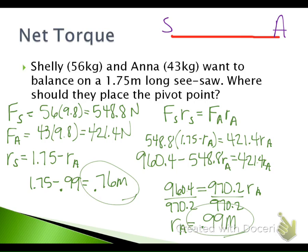To find Shelly's distance from the pivot point, we take 1.75 minus 0.99 meters, giving us about 0.76 meters. So the pivot point should be shifted toward Shelly's side because she has the greater mass.